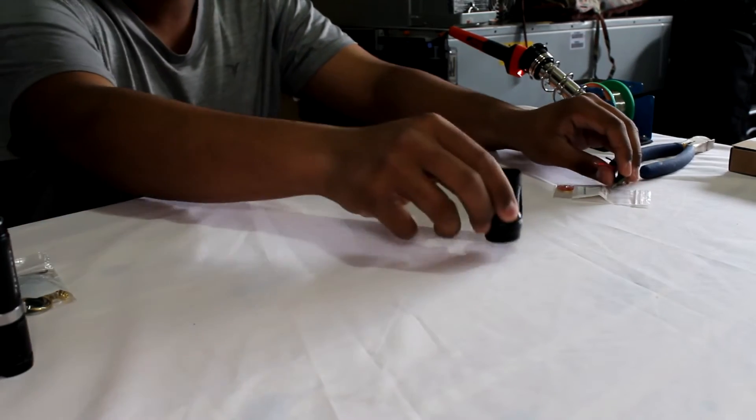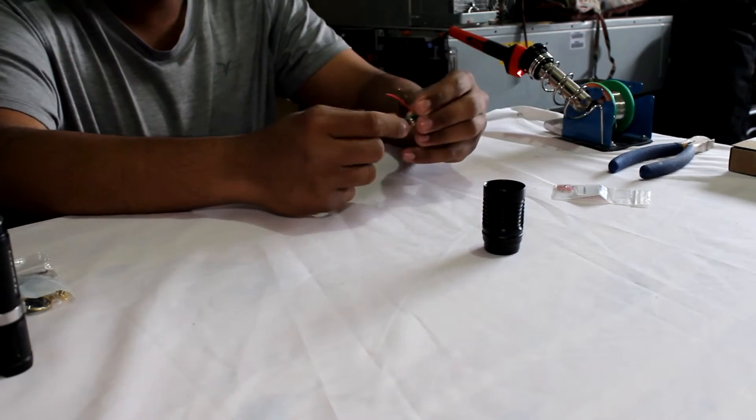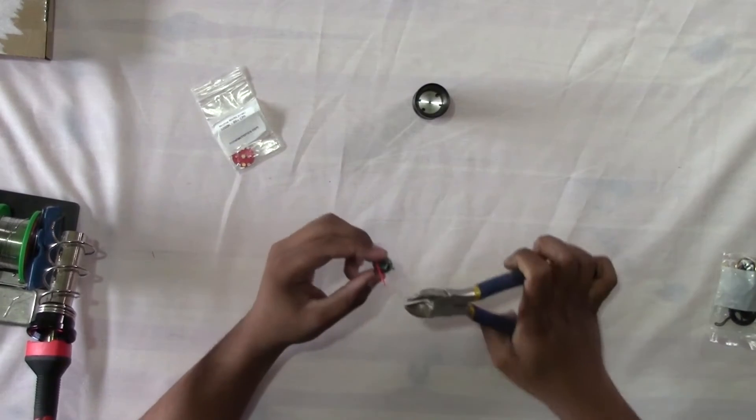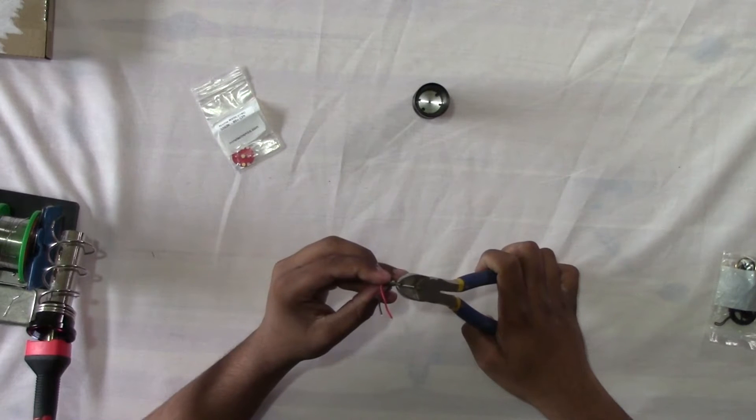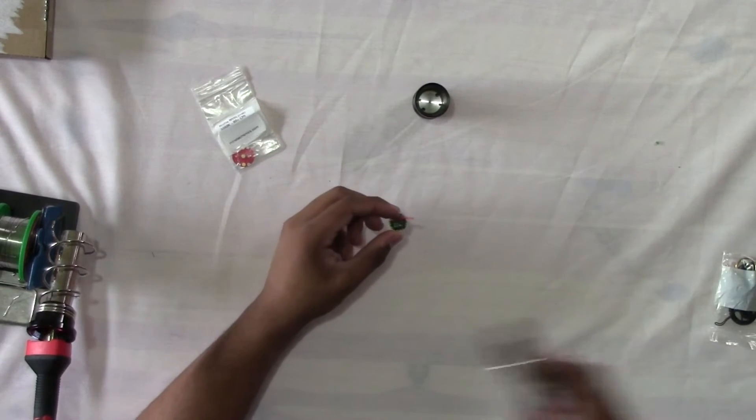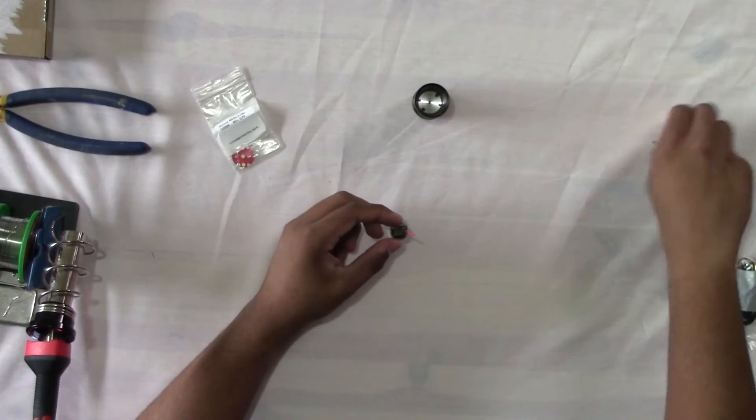Alright, so now that this is prepped, put this over to the side for a second. You want to take the driver board and this little nub that's on the end, grab the side cutters and just snip it right off, just like that. Now this is prepped.